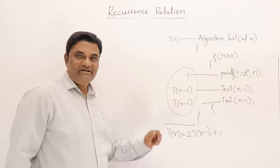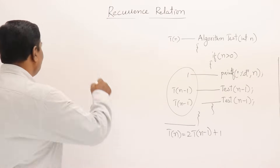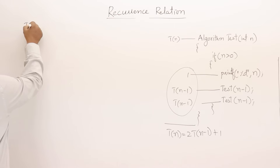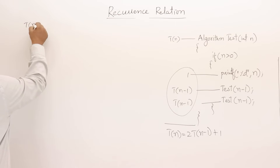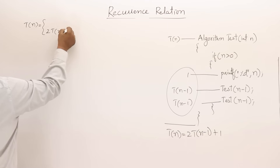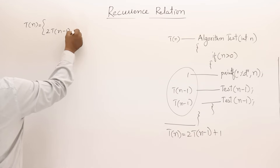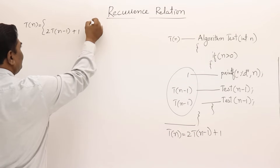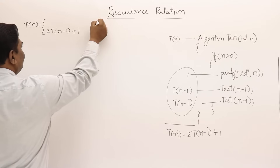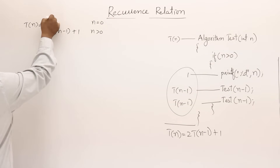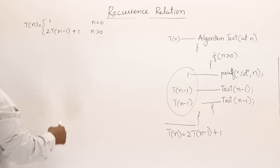Now the recurrence relation will be: T(n) = 2T(n−1) + 1 for n greater than 0, and when n equals 0 it is a constant — I take 1.